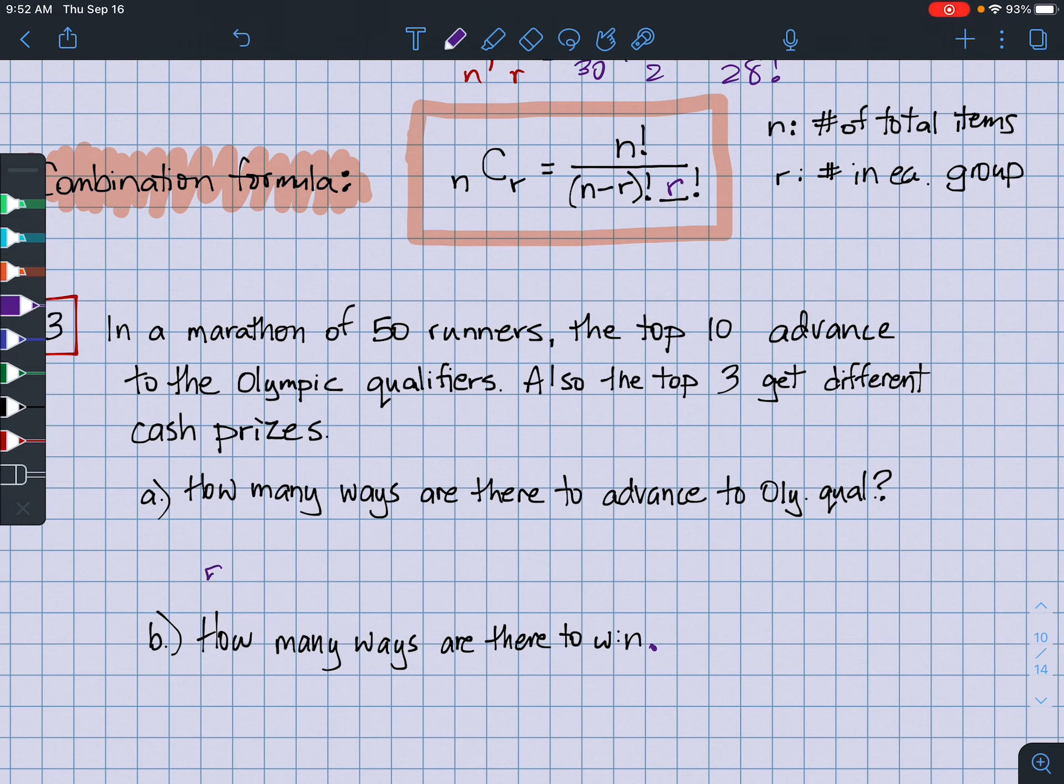All right. So our formula says we're going to do 50, choose 10. All right? And in this last problem, we're going to, since we're asking how many ways are there to win, and here, it's not a matter of just being in the top three. You actually want to be in the top spot or the second spot or the third spot. So order is a good idea. Now we've got to do permutations. Okay? So here, order is not a big deal. But here, order is. So we're going to do 50 pick three.